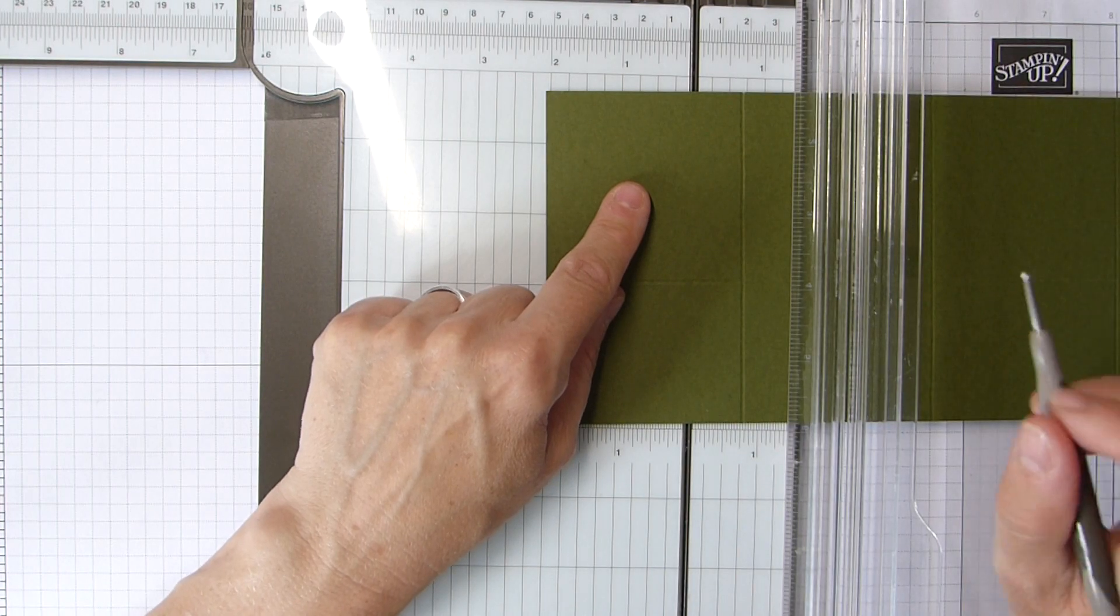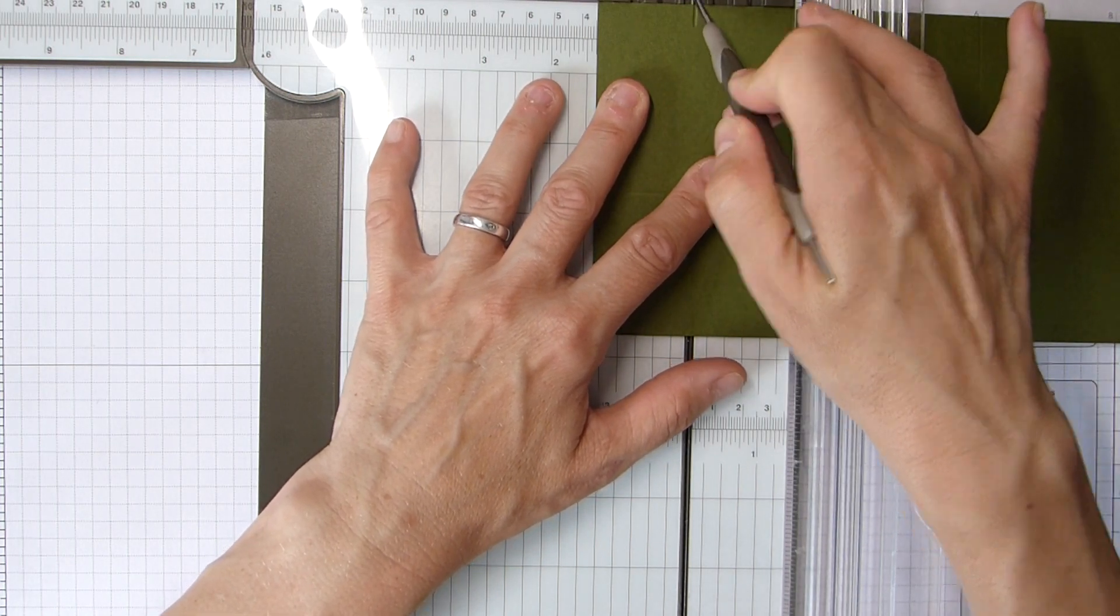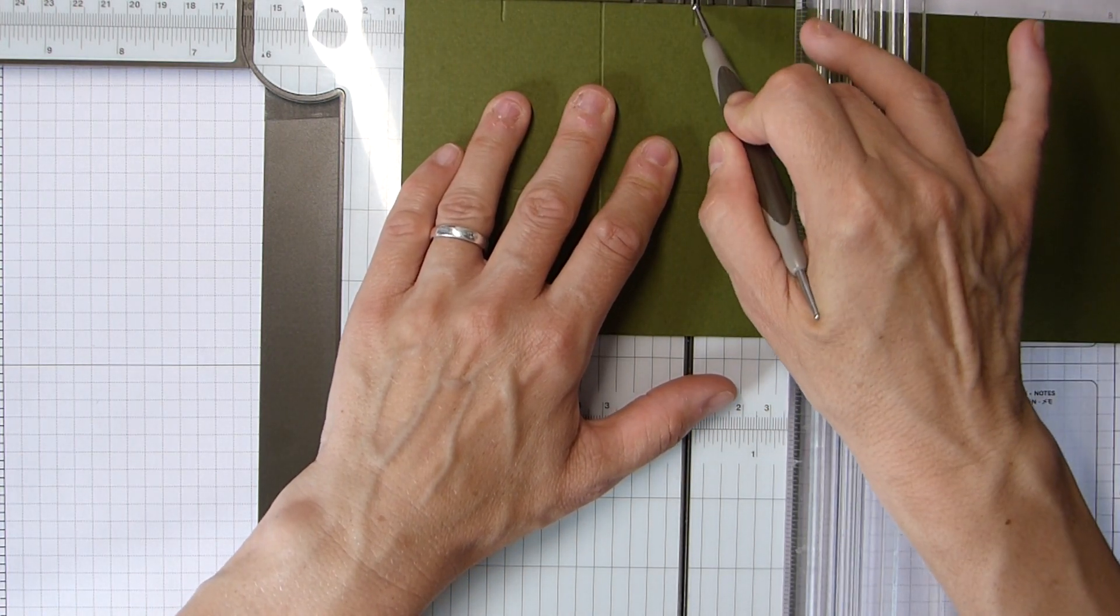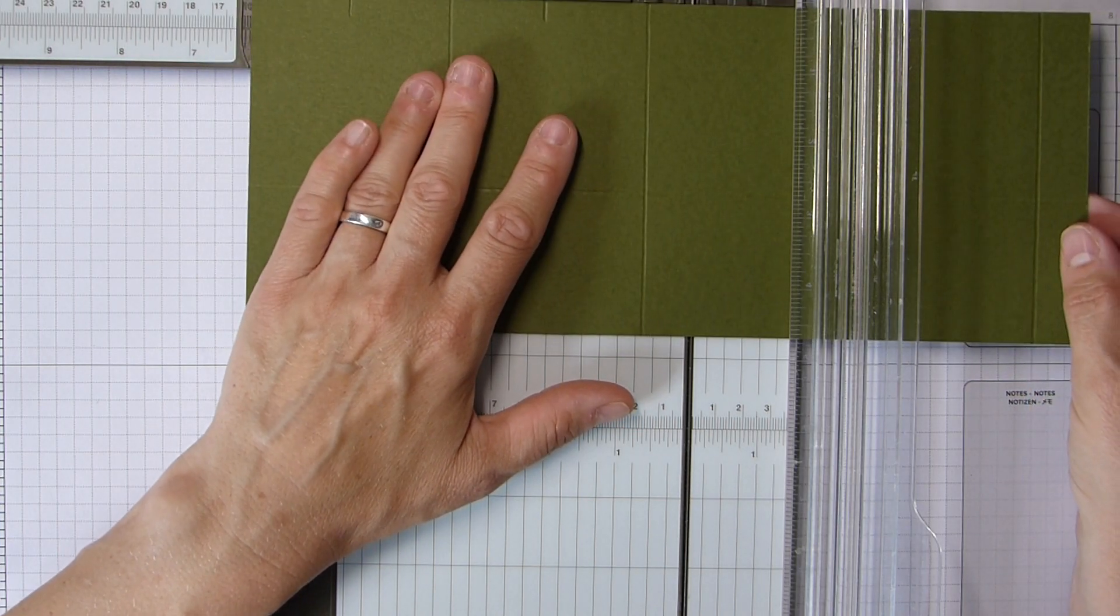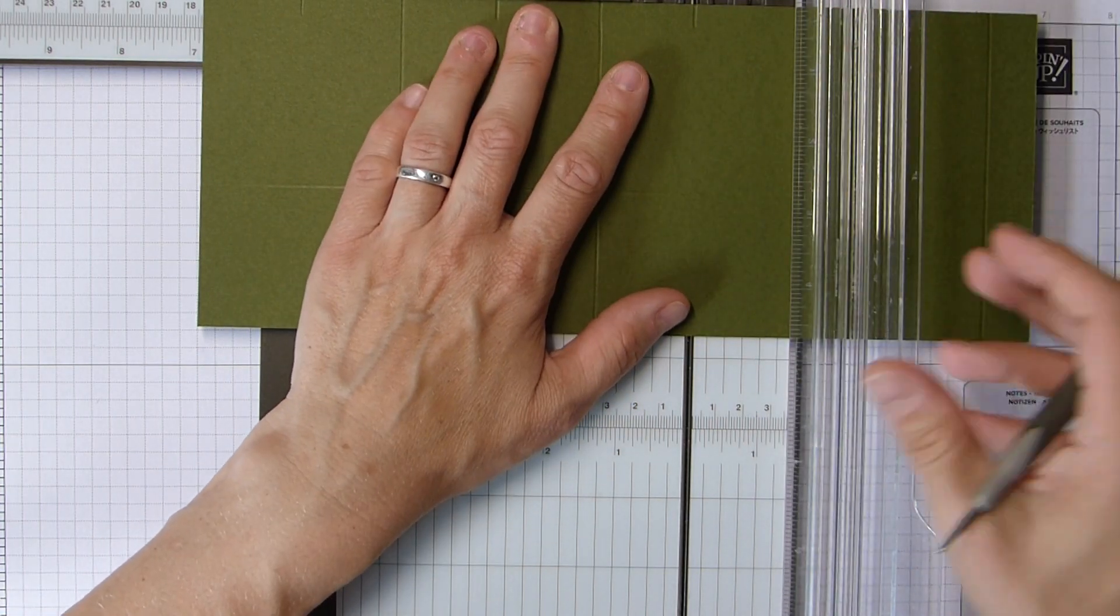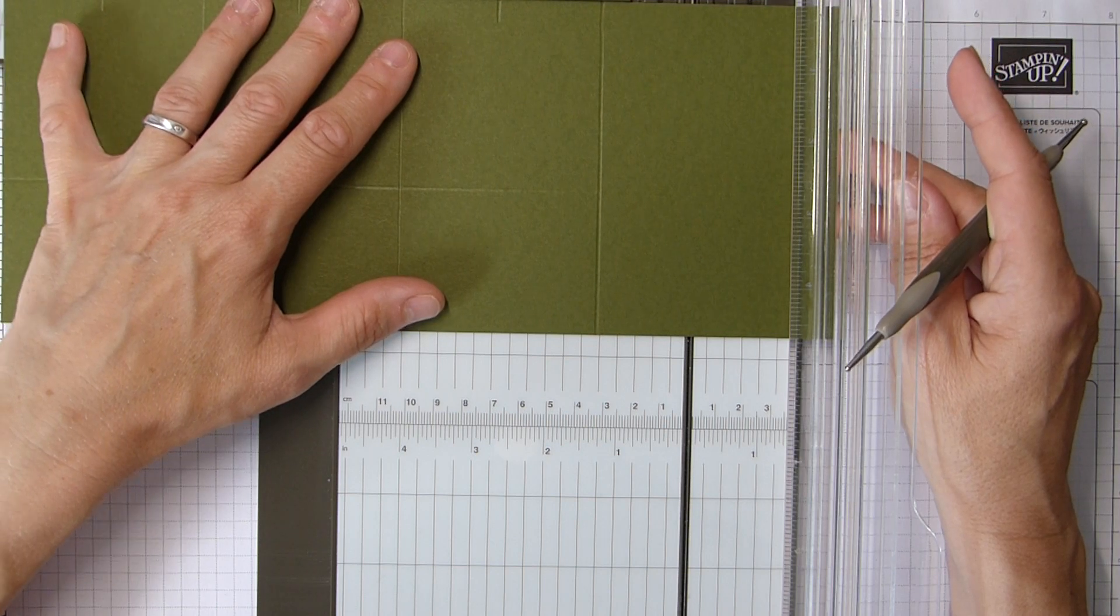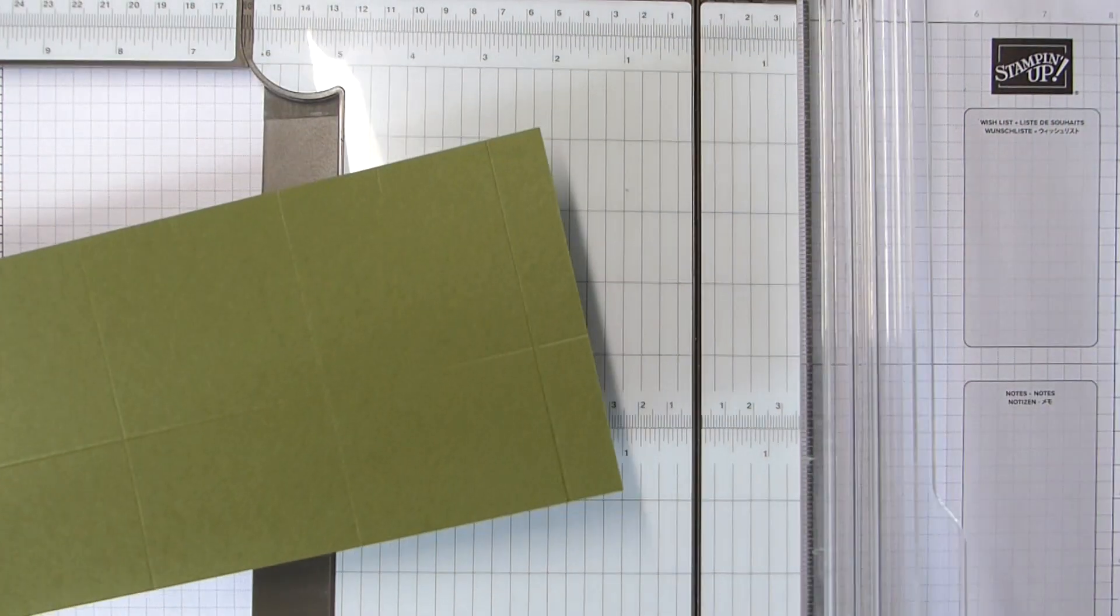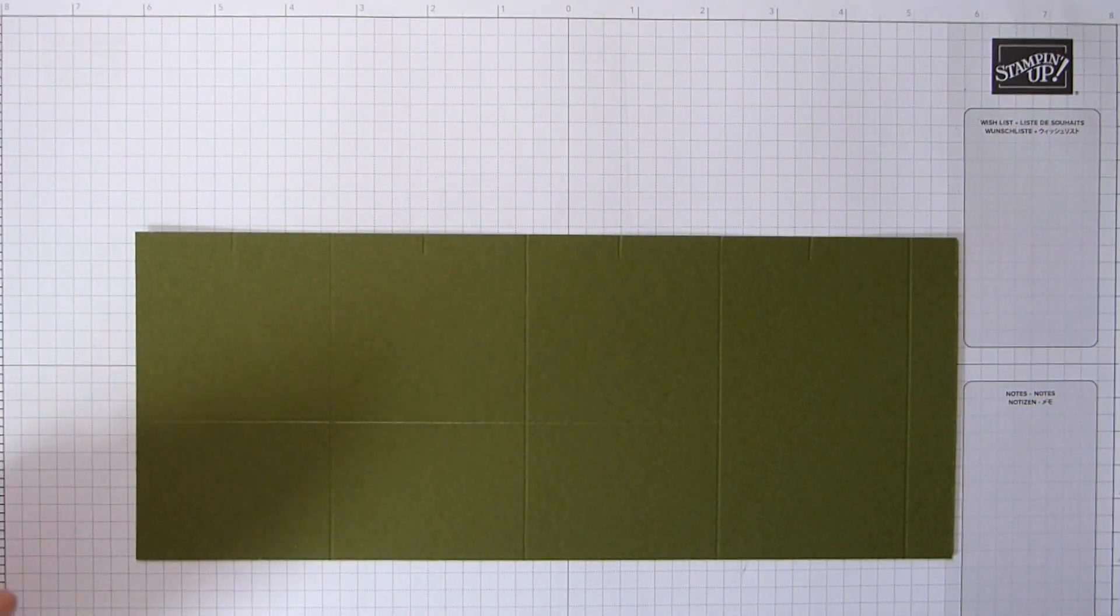Then we're going to go back to the start again. And now we're going to mark at one and three eighths. Just a little score there. One and three eighths, four and one sixteenths. Six and thirteen sixteenths. And nine and nine sixteenths. Mark again. And in centimeters, you will need to mark at three and a half, ten and a half, seventeen and a half, and twenty-four and a half.